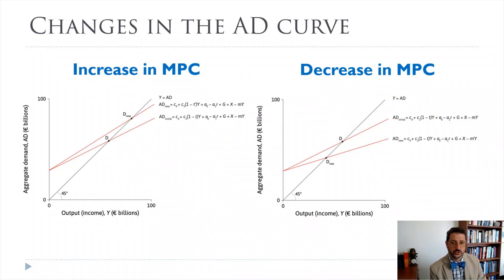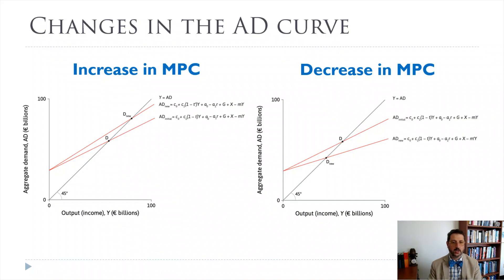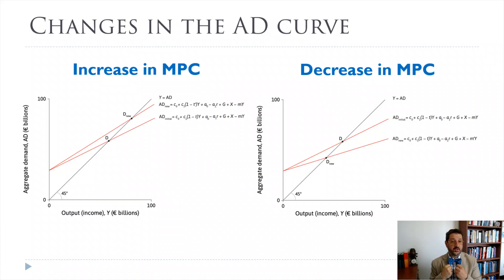The other thing that can happen is a change in our marginal propensity to consume. An increase in the MPC makes our aggregate demand curve steeper and increases the multiplier, while a decrease in the MPC gives us a smaller multiplier. Absent any change in spending, a higher MPC leads to higher equilibrium output and a lower MPC leads to lower equilibrium output. People feeling optimistic save less and spend more (higher MPC), while pessimism leads people to increase savings (lower MPC) — and that can lead to lower output as well.